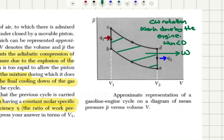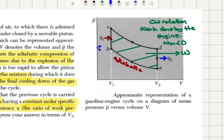We have four steps: A to B is adiabatic compression — an adiabatic process. B to C is an isovolumetric process. D to A is also an isovolumetric process. And C to D is another adiabatic process.